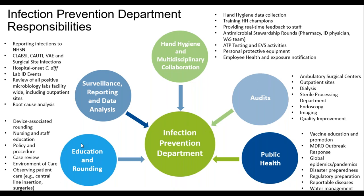And then lastly, public health. We have to report out all the reportables, and that's a lot of work. Luckily for our system, we have someone dedicated to that across all campuses from a centralized location. Then outbreak response, global epidemics and pandemics — which we're in the middle of one — regulatory preparation and water management programs. So we do a lot, and I hope this slide really conveys that. If you're from public health or epidemiology and want to know what an IP does, I highly recommend reaching out to your local hospital to shadow.